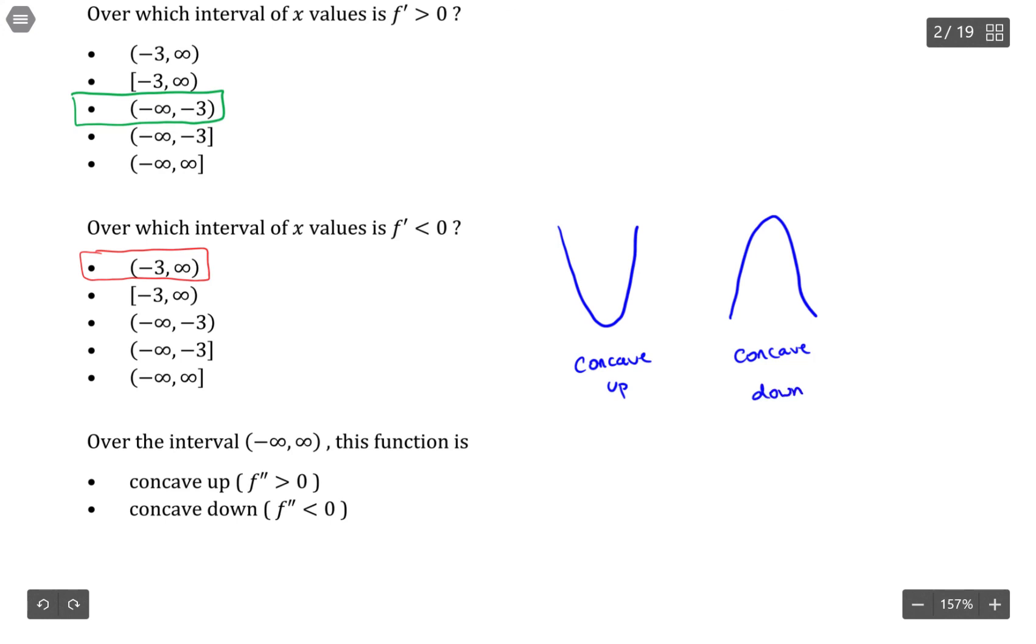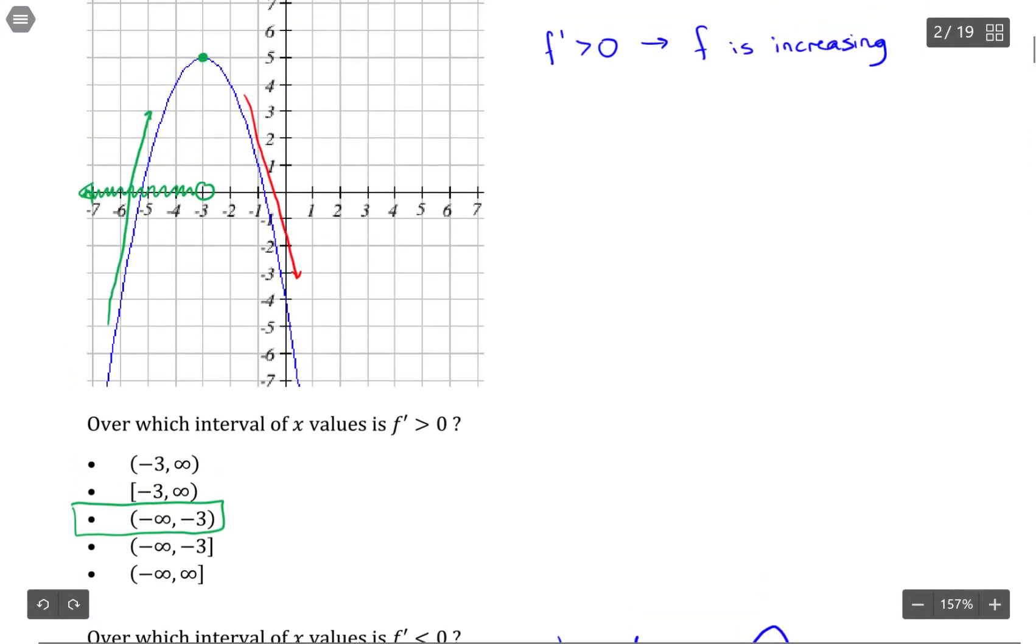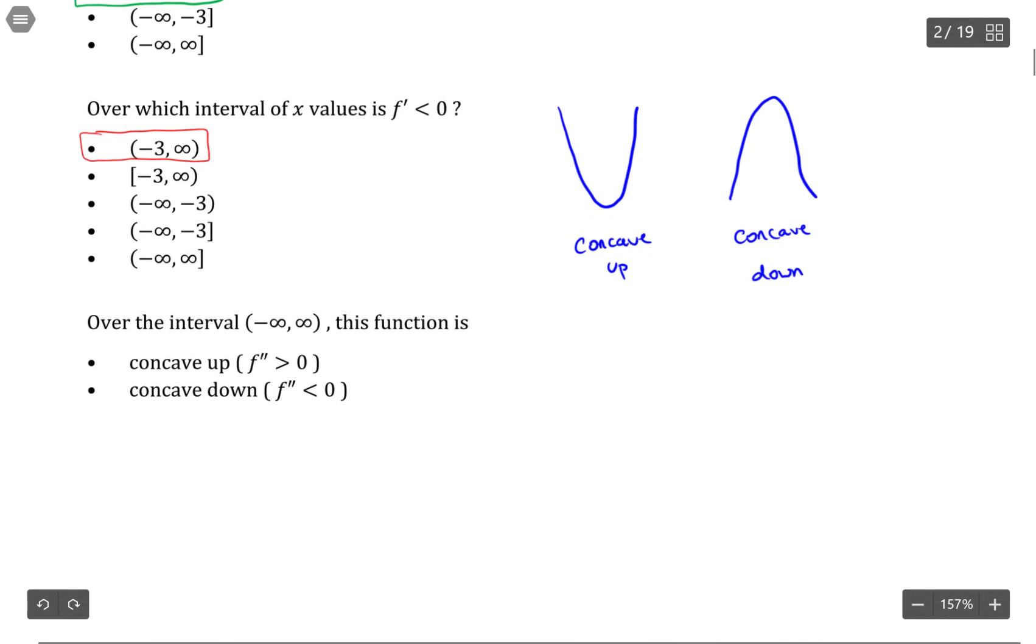All right, so this particular graph, it's pretty straightforward. It is a parabola facing down, so the whole thing is concave down. So that's our answer for the last one.